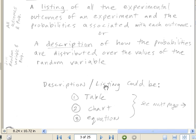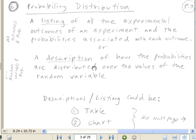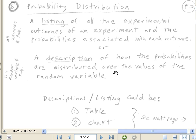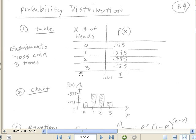A description or a listing of the probability distribution could be given in a table, a chart, or an equation. Let's go to our next page and look at an example here.